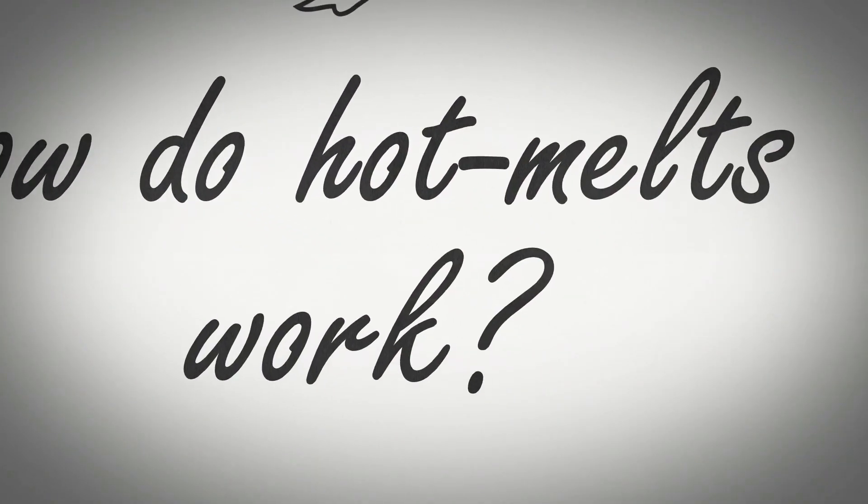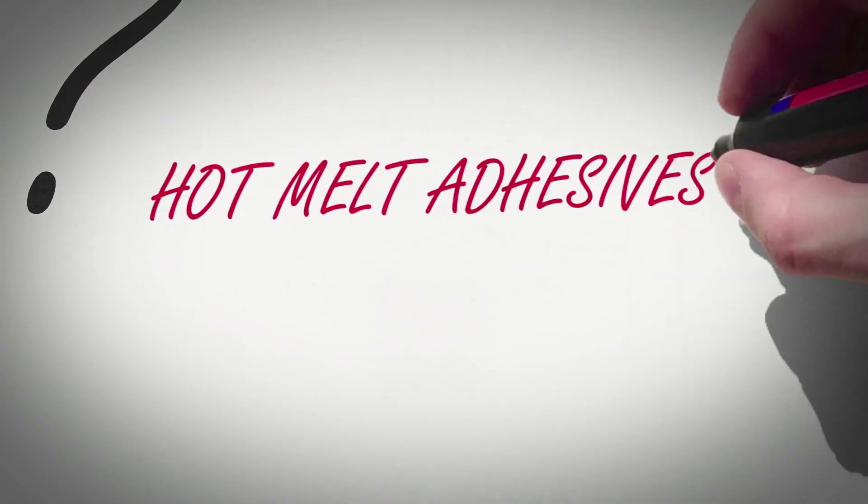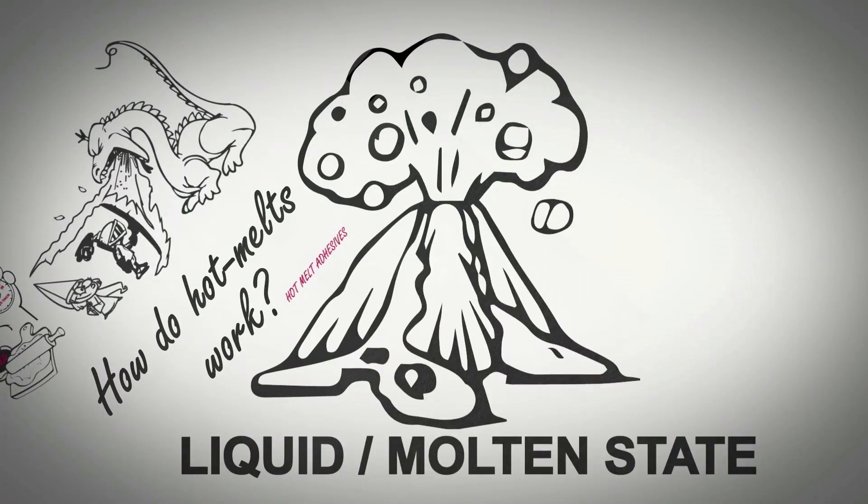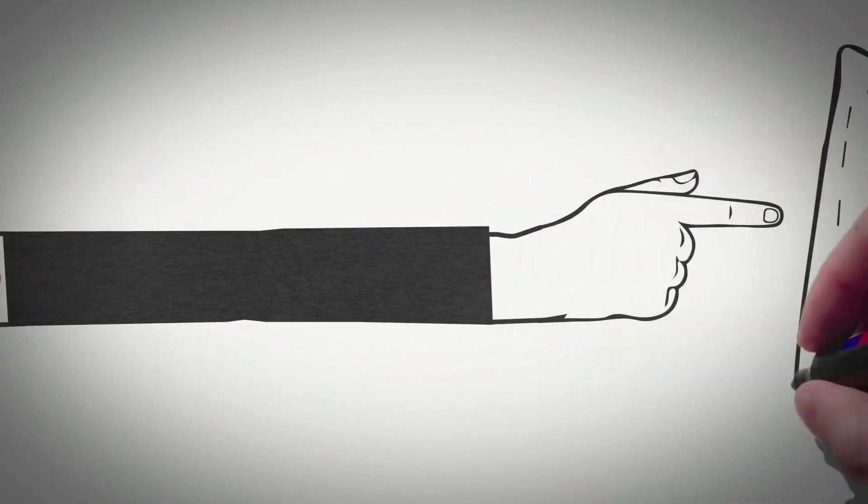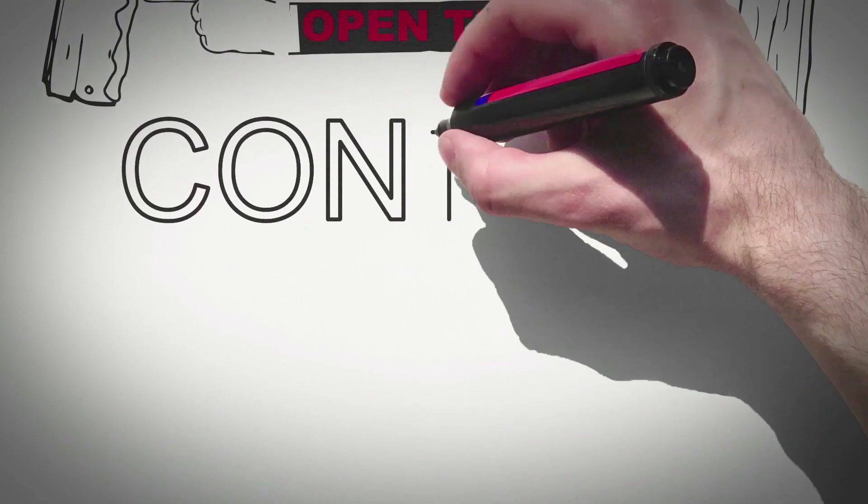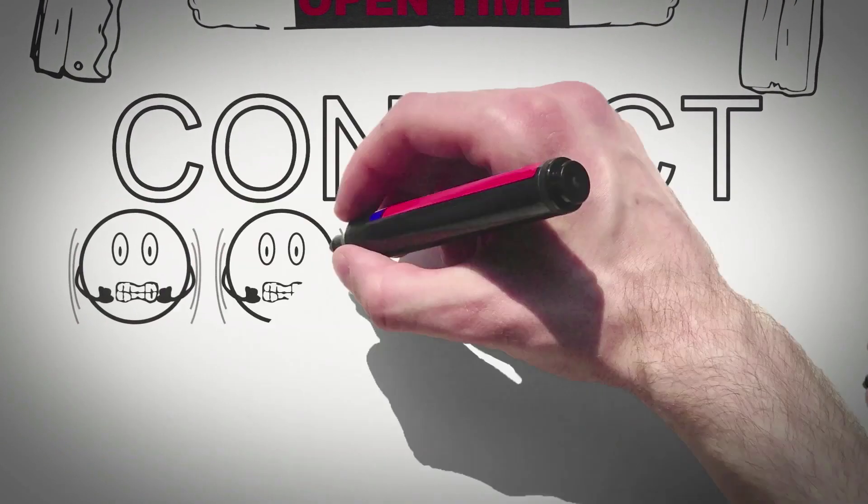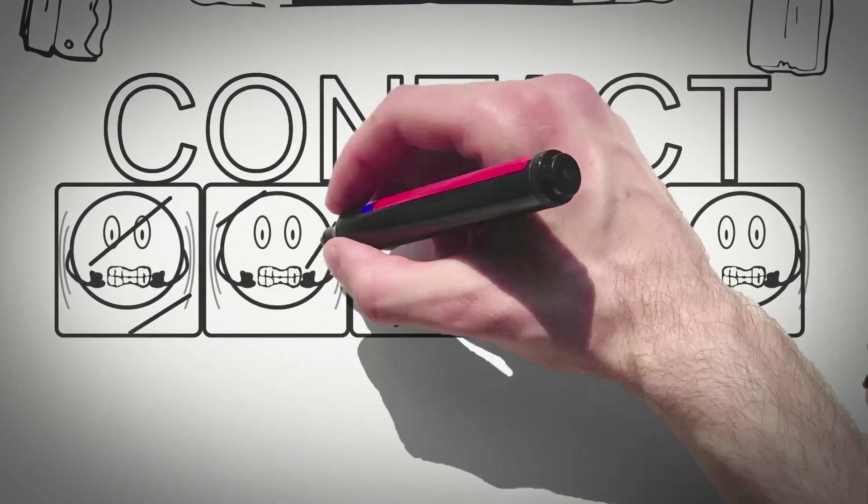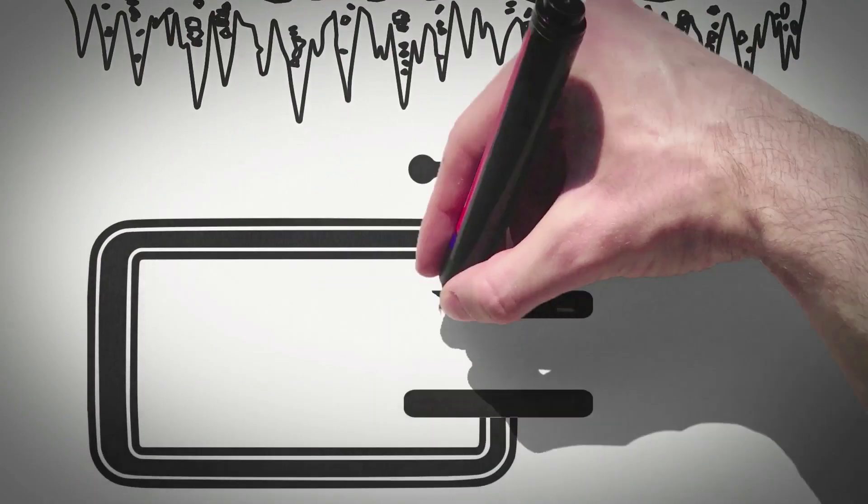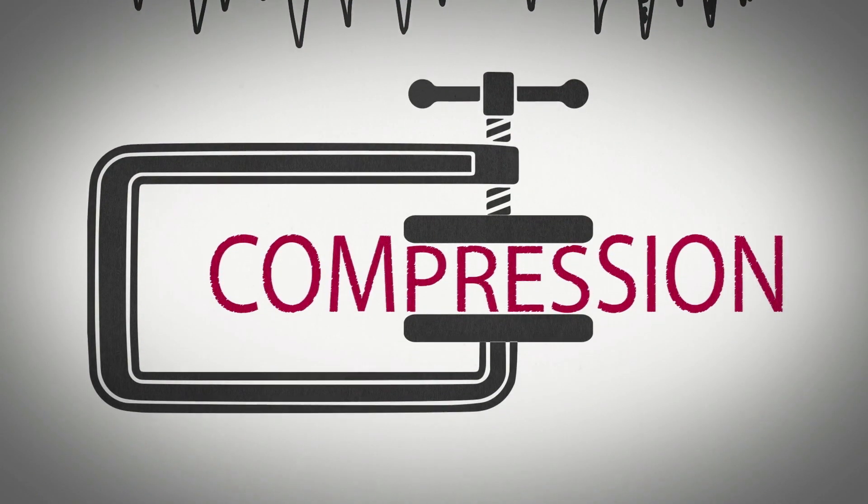So how do hot melts work? Hot melt adhesives are applied to a material in the liquid or molten state. The time between applying the adhesive and then bringing the second material in contact is called open time. When the second material is brought into contact, the adhesive cools down and solidifies very quickly. Compression of materials is very important at this stage.